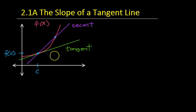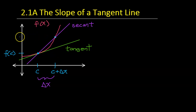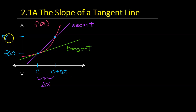Now, what about the second point? Let's call the distance between the two x values delta x — delta x means the change in x. With that in mind, the second x value is just C plus delta x. In the same way, the y value of the second point is the value of the function at that x value, so it's f at C plus delta x.